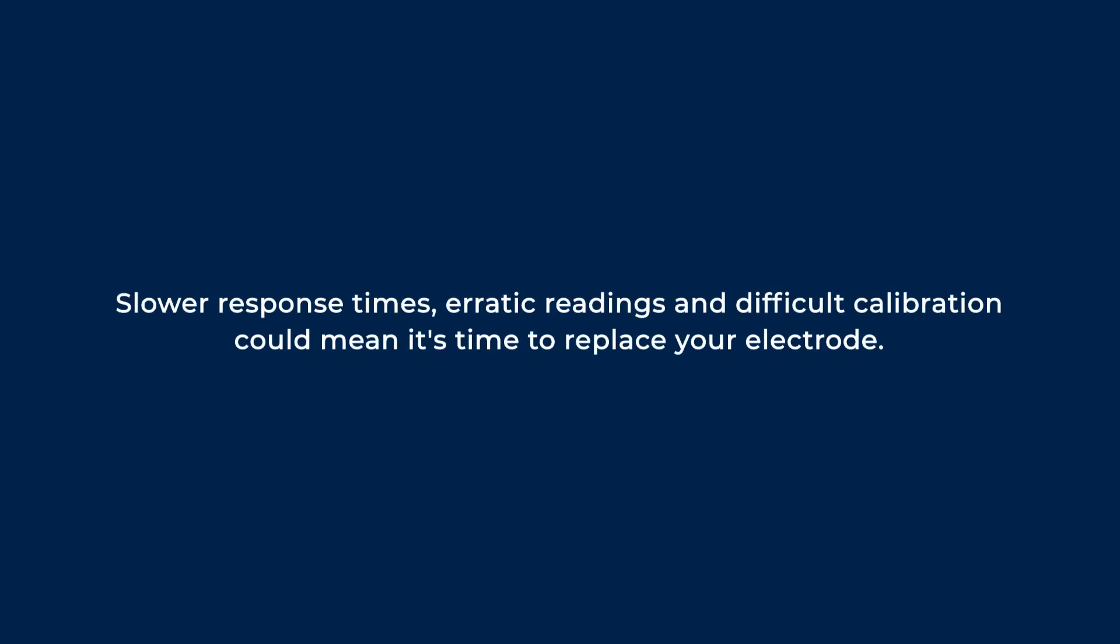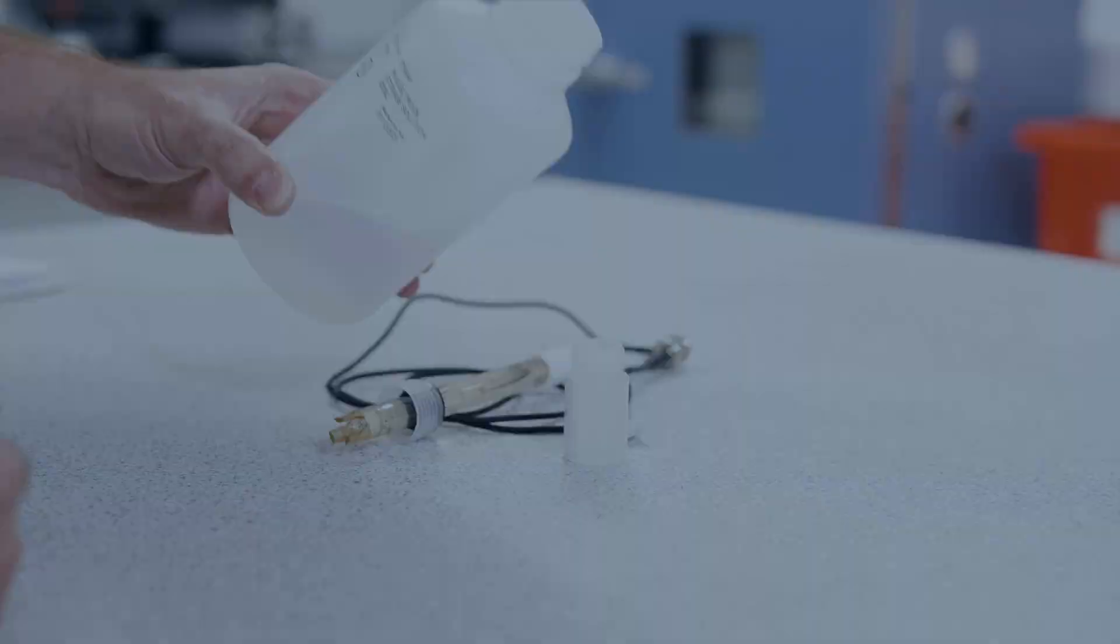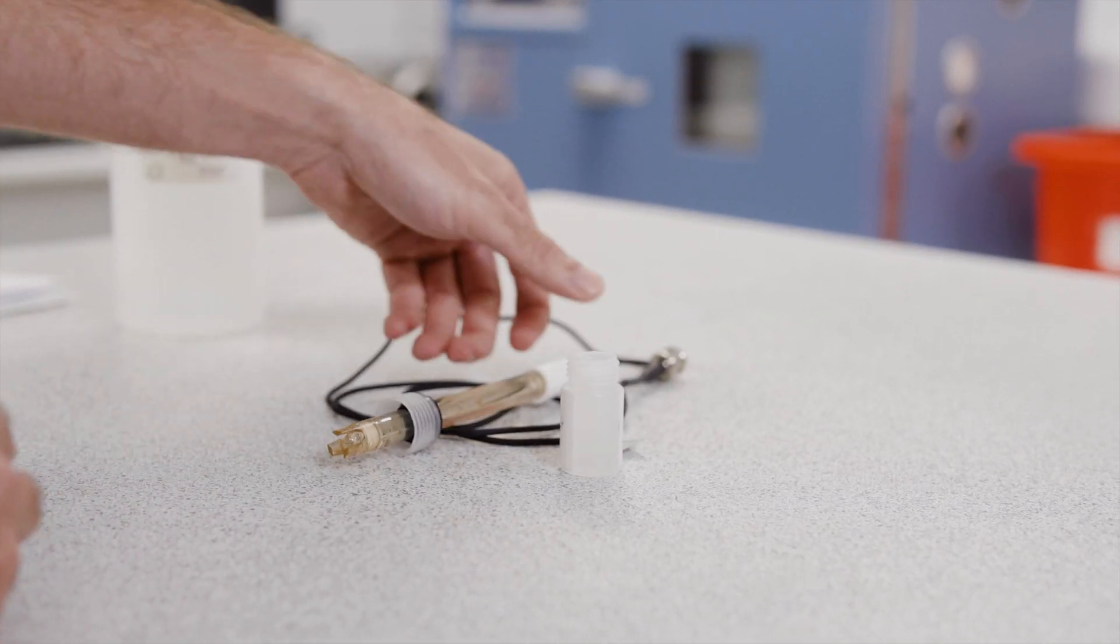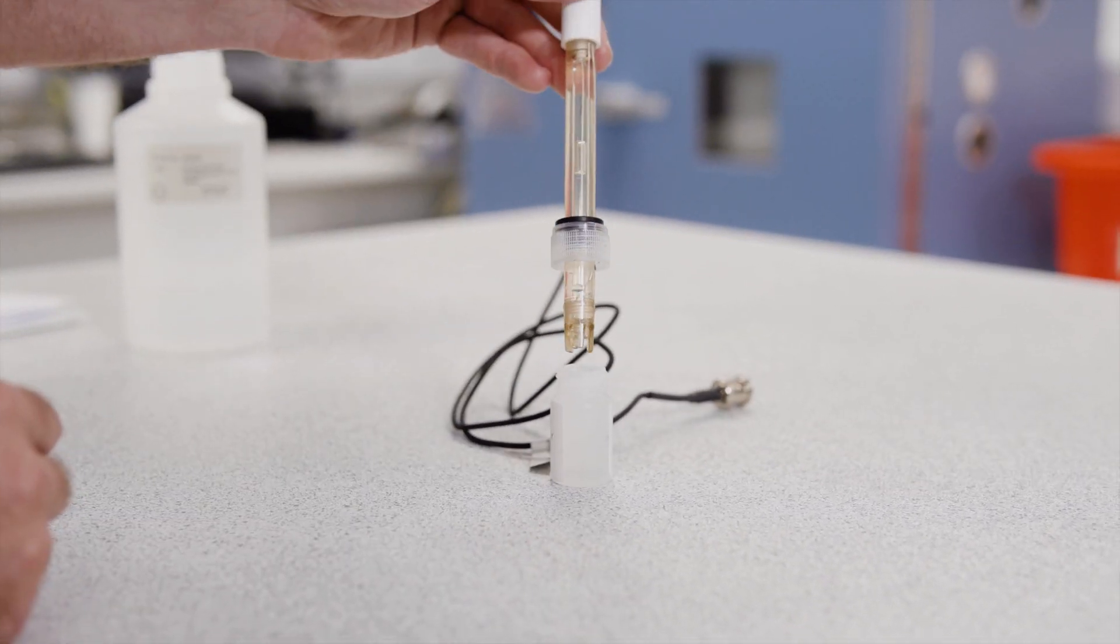Over time, the electrode's performance can degrade. If you notice slow response time, erratic readings, or difficult calibration, it may be time to replace it. Regular maintenance and occasional electrode replacement are essential for accurate pH measurements.